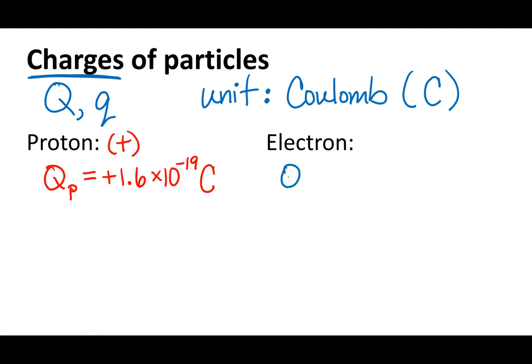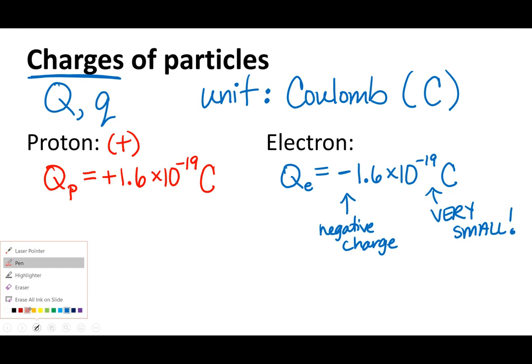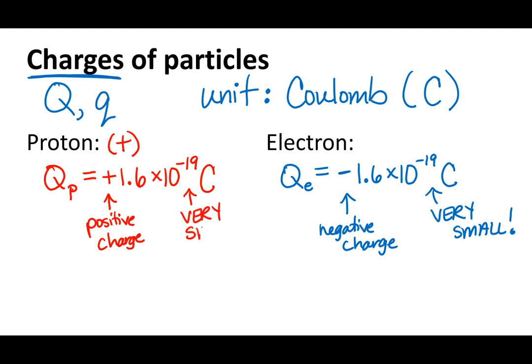An electron, QE, will be the exact same charge but negative. So negative 1.6 times 10 to the negative 19 coulombs. Notice that this negative means that it is a negative charge, and the negative 19 means very small. For the proton, this positive in front of the 1.6 means that it is a positive charge, and this negative 19 means it is still very small. Remember, they have to be the same.